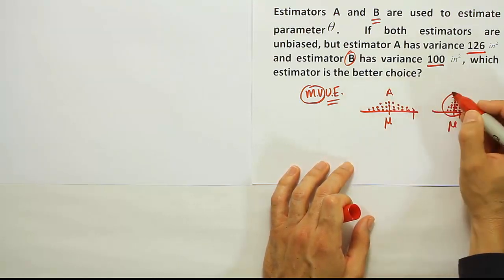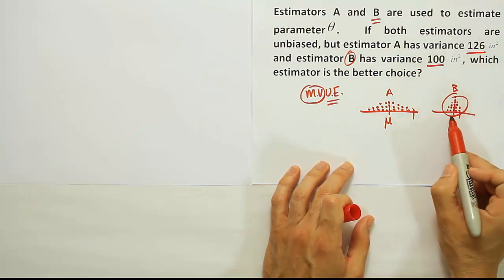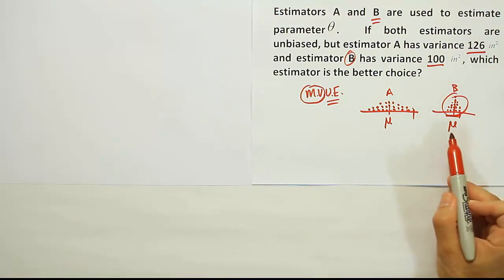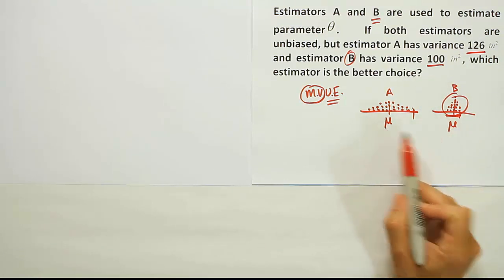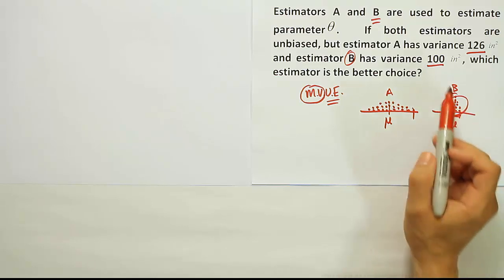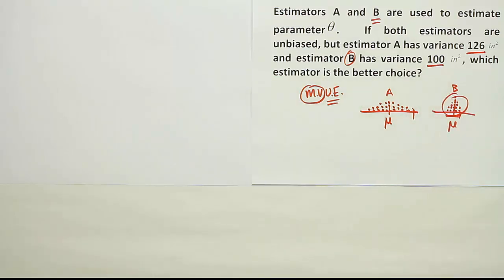So if this is estimator A and this is estimator B, it's easier to see the one with less spread as the preferred choice because it's clustered around the mean. That's true of all unbiased estimators. But this is more tightly clustered around the mean because it has a smaller variance. So estimator B is the preferred choice.